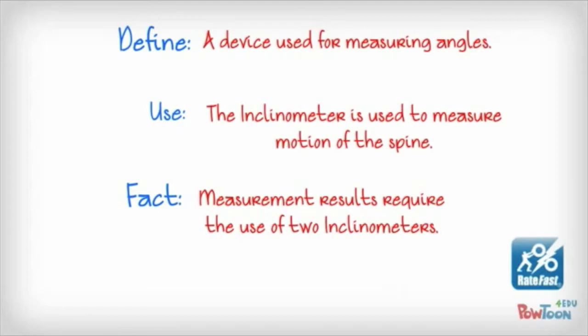The inclinometer is used to measure again both at the top and the lower part of the spine, and the measurements of the spine do require the use of two inclinometers because as the spine moves, there's actually motion at both the top and the bottom portions.